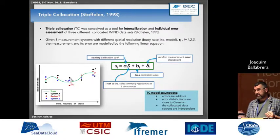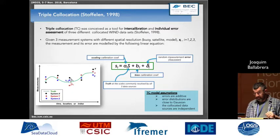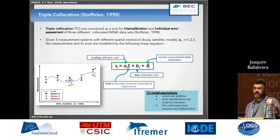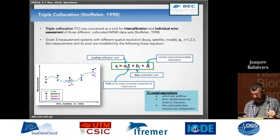The idea of triple collocation is that we use three independent datasets. We want to calibrate them using a relationship where we have the true signal we want to measure, and the s-sub-i are the different observations given by three different products. What we want to do is solve these calibration equations.